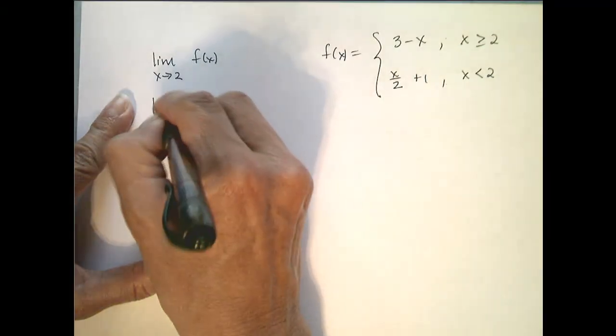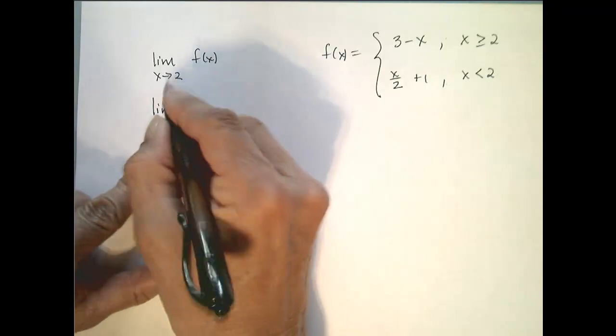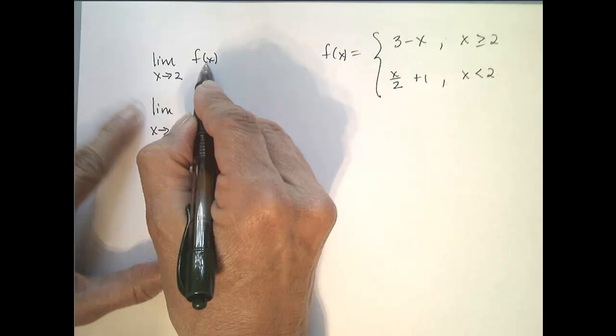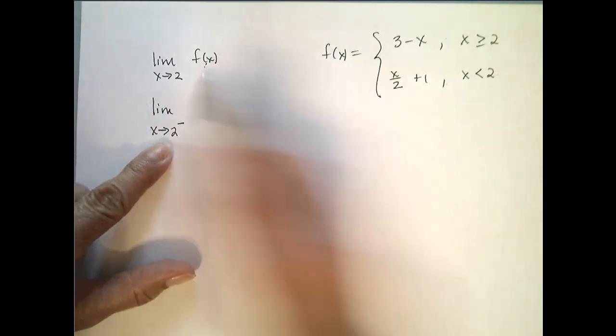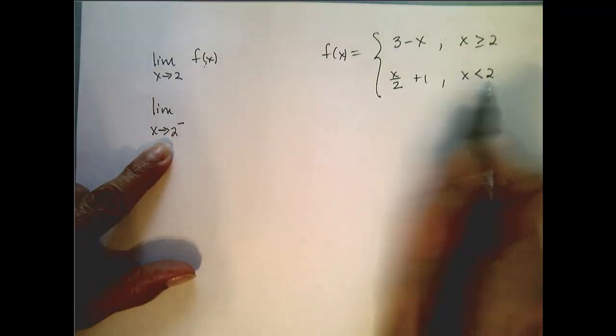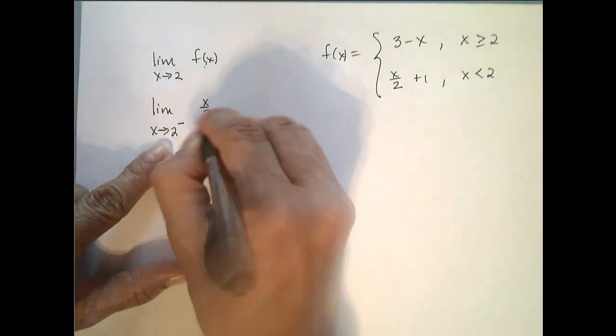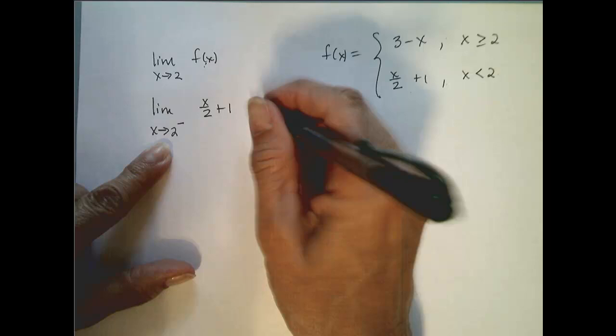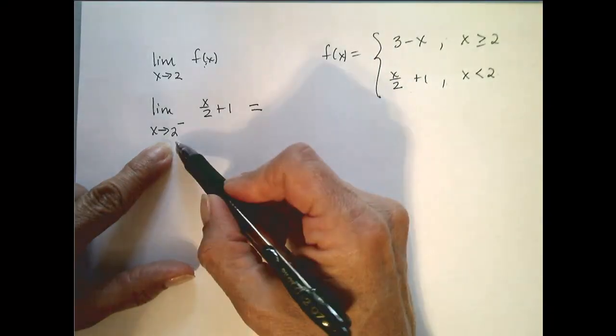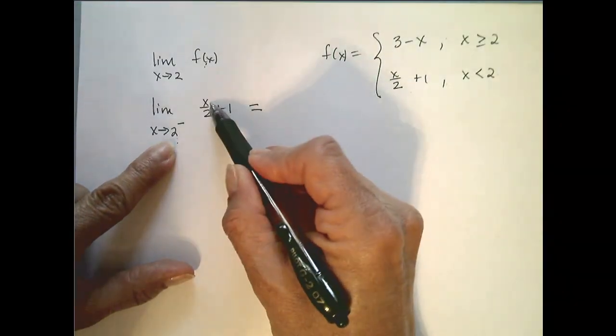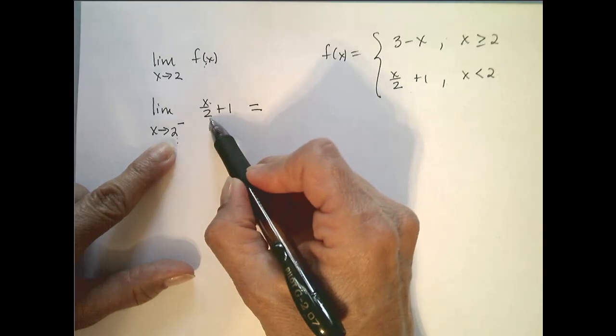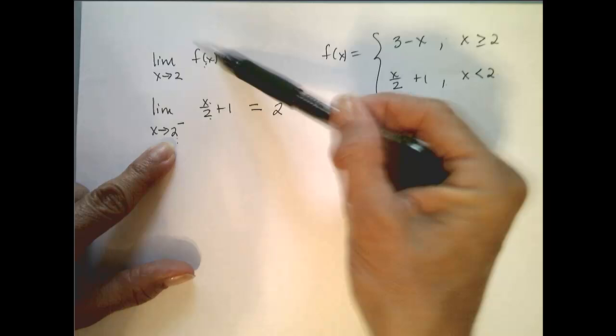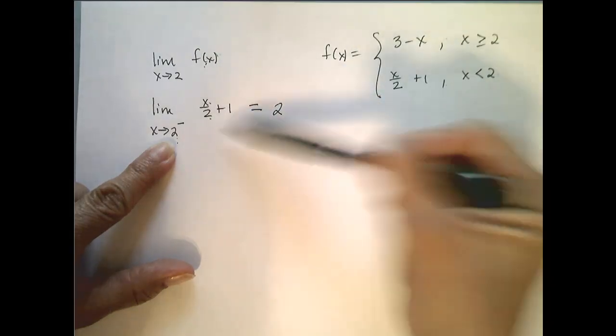Let's first look at the left-handed limit. The limit as x approaches 2 from the left of f(x)—well, how is f defined to the left of 2? It is x over 2 plus 1. Now I look to see if I can do direct substitution, which I believe I can. If I plug in 2 here I get 2 over 2 which is 1 plus 1 which is 2. So the limit of this function from the left is 2.